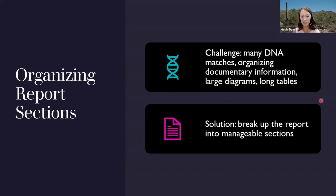The solution to these challenges is that we can break up the report into manageable sections. Anytime we're writing a longer genealogical document, we need to have sections — they help the reader know what they should be focusing on at any given moment. The more sections you have, the easier it is for them to understand. If you have several pages with no section headers to tell the reader what to focus on, it can be difficult to track what you're reading and not fully digest what's going on.